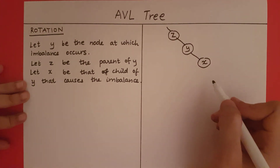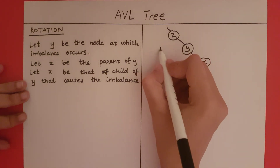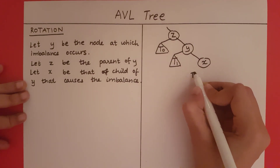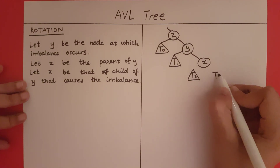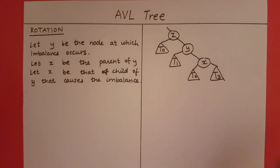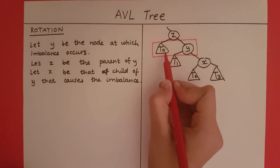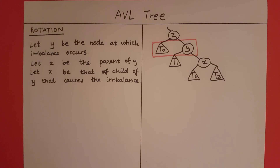Now each of these nodes can have their respective subtrees. Y is the site of imbalance — that means Y has a height that is more than one unit apart from its sibling. The sibling of Y is the tree T0, and the height difference between T0 and Y is more than one. Now I am going to rotate this tree to the left such that the tree becomes balanced.